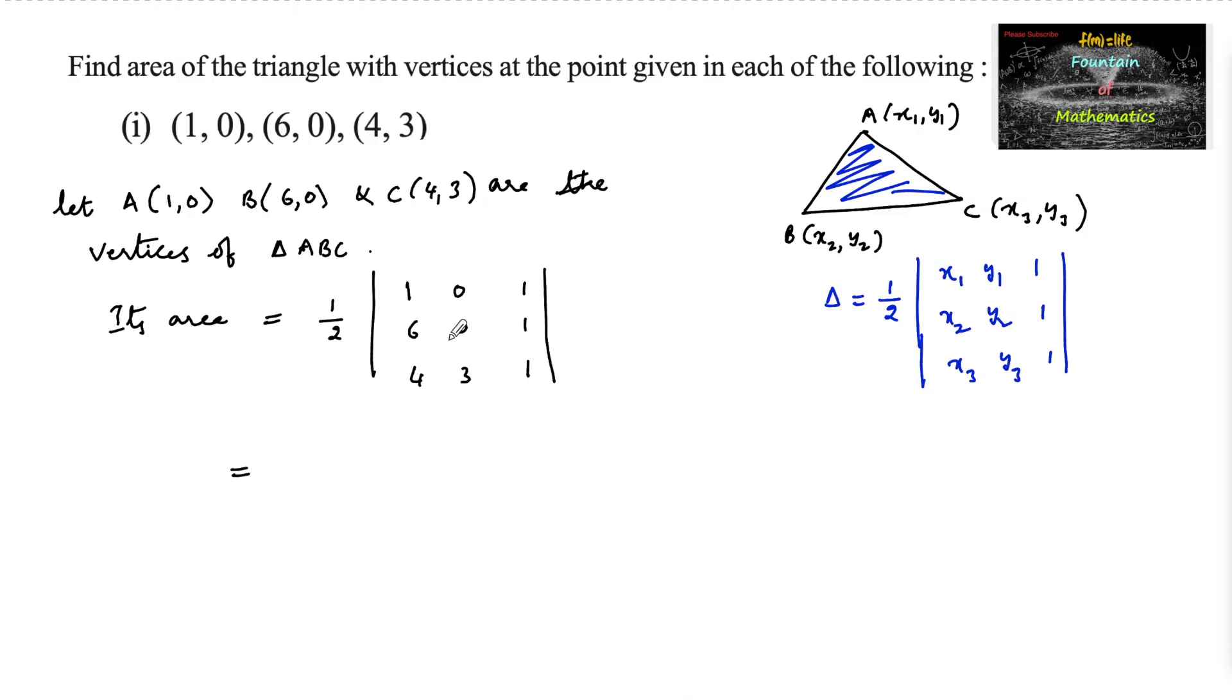Let us expand using the second column because the second column has more zeros. The signs are minus, plus, and minus, because the element positions are a12, a22, and a32.